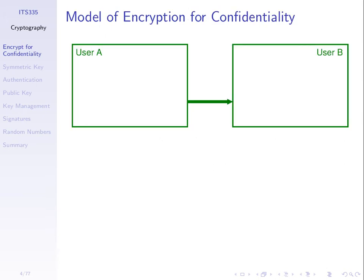So a model for how we use encryption: let's say we have a user who wants to send data to another user — A to B. The normal users send across a network. Then we have a malicious user, an attacker, user C in this case, and we assume that this malicious user can intercept and see everything sent between A and B. So everything that comes out of A's computer and goes into B's computer, we assume C can also see that. That's a normal assumption that we have.